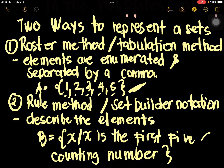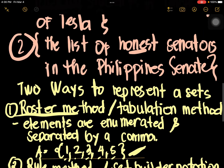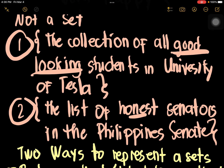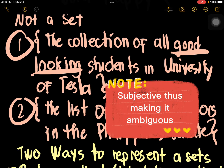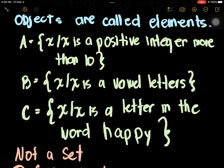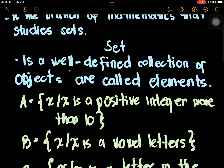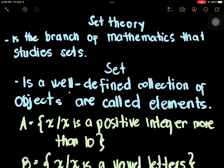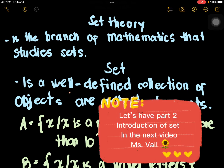So we have the roster method and the rule method — two ways to represent a set. We also have examples of not a set because they are subjective by nature, and examples of a set because they are well-defined. The definition: a set is a well-defined collection of objects, and those objects are called elements. Set theory is a branch of mathematics that studies sets.